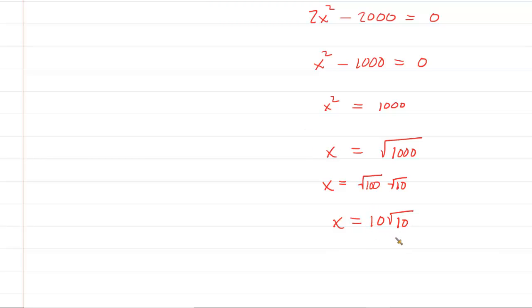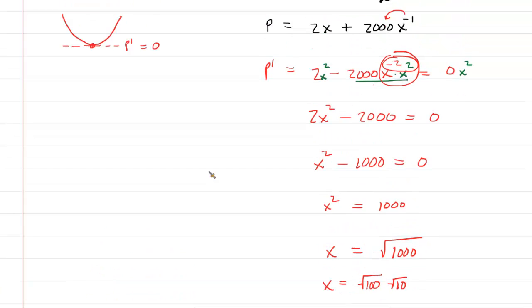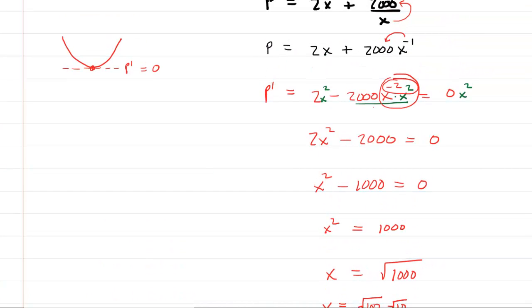But your teacher might also require you to sort of prove that this minimizes the perimeter. And we can do that by employing the second derivative test. As the name implies, to do the second derivative test, we have to compute the second derivative. So we're going to go and calculate P''. For us to do that, we're going to need to go back and pick up our P'. P' was equal to 2 - 2000x^(-2). And so P'', the derivative of 2 would be 0. Another power rule here, we're going to multiply negative 2 by negative 2000, so we get positive 4000. And then we have x^(-3). So that's our second derivative.